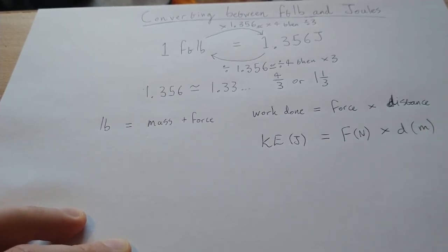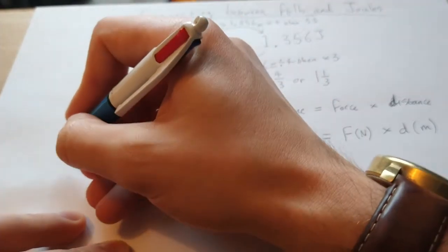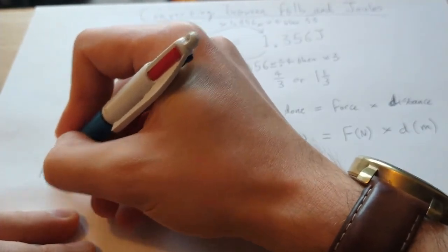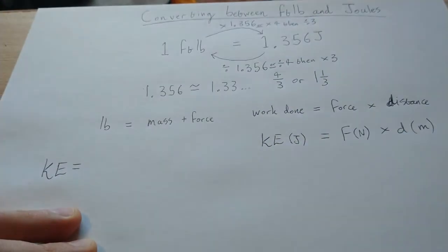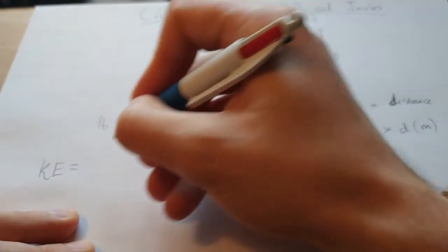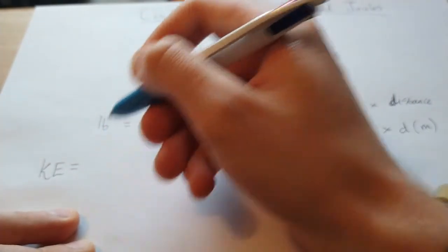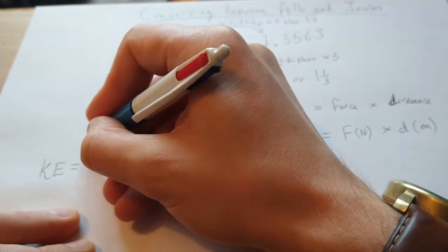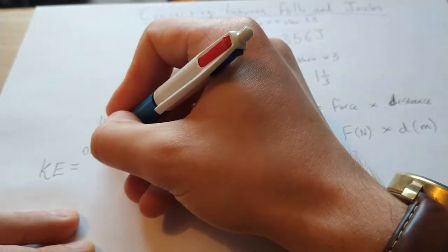Now if we try and do this for our imperial units, when our kinetic energy is equal to our force, that will be if we now convert, so one pound is equal to 0.454 kilograms.